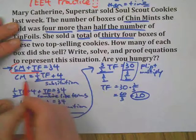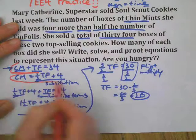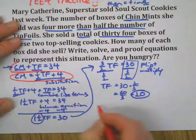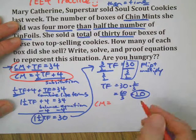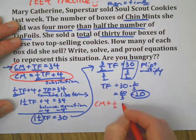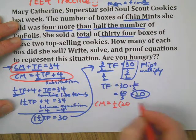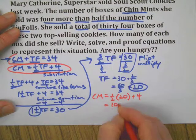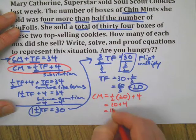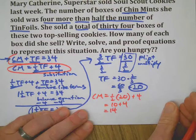Now we're going to find out how many boxes of Chin Mints were sold. One-half the number of Tin Foils plus four is: 10 plus 4 equals 14.